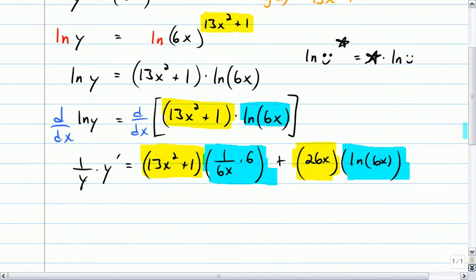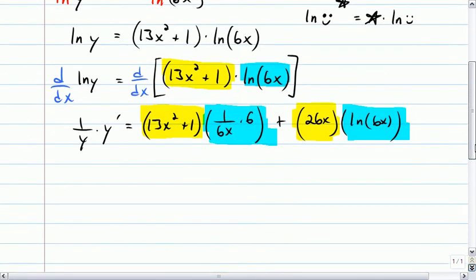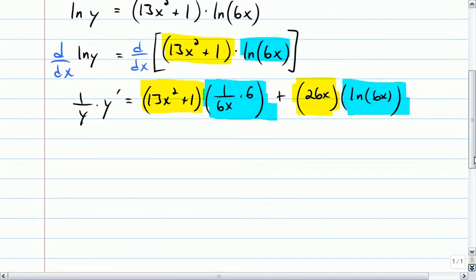I'm not so worried about simplifying right now. I just, we're trying to get comfortable with the process. So, I need to get y' by itself. I'm going to multiply both sides of the equation by y. Now, the right-hand side has two terms, right? You've got this piece and this one over here. So,